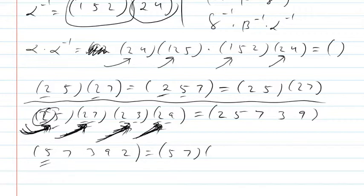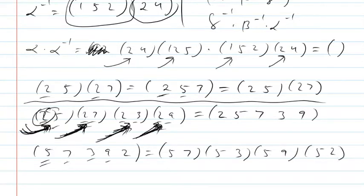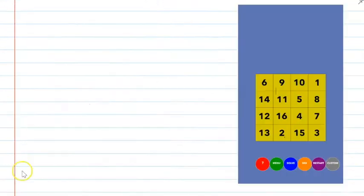I can rewrite it by using that first number in all the cycles, and just go through — make 7 the second number in the first cycle, make 3 the next, make 9 the next. You can check that it does work. So it's kind of like factoring — decomposing a single cycle into a product or composition of 2-cycles.